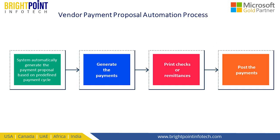With vendor payment proposal automation, the steps are much fewer. Setting up the parameters is a one-time activity. Once predefined rules are in place, the system automatically generates the payment proposals. Then we simply go into the lines of the payment proposals, verify them, generate the payment, print checks or remittances, and post the payment. This is a much easier process compared to the traditional process.